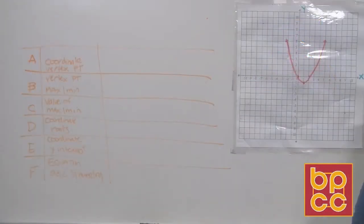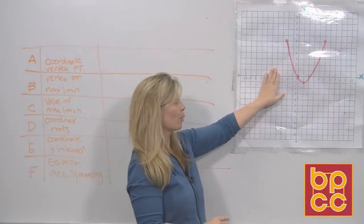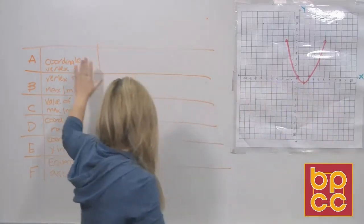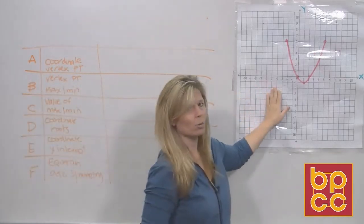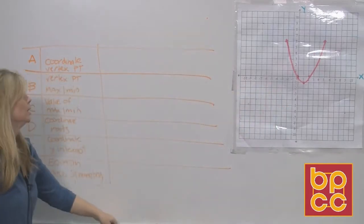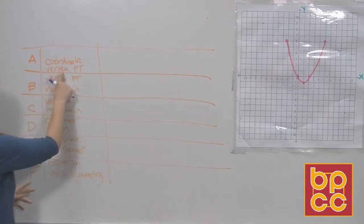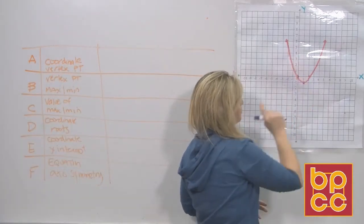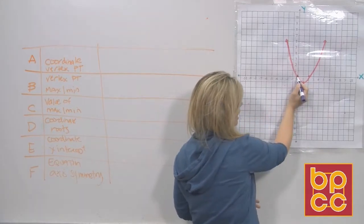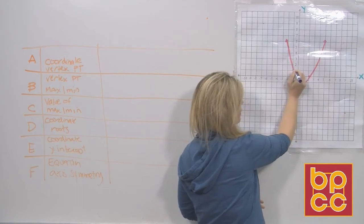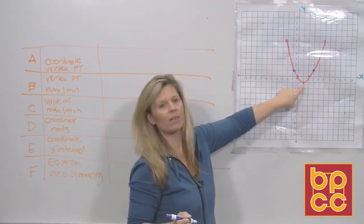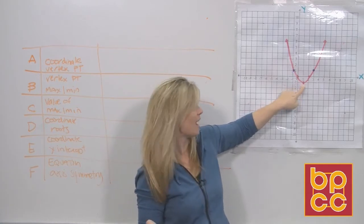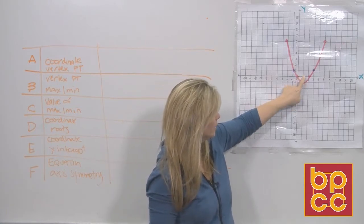Let's go to the graph board. I've drawn a picture of a parabola and I want to make sure we all know how to find the different parts. The first question is understanding where the vertex point is — the point that stands by itself. Every other point on this parabola has a buddy, a point on the left matched with a point on the right, except for this one point all by itself. The vertex point is located at (1, negative 1).